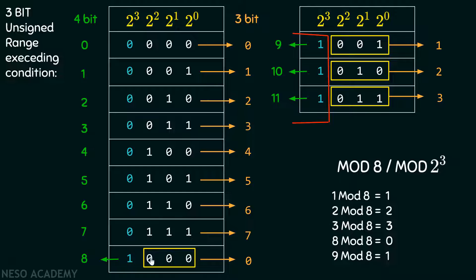This is because if we try to represent the value 8, why are we getting value equal to 0? Because we apply 8 mod 8, which is equal to 0. Mod gives us the remainder — this is the difference between a division and a mod function. Division provides us the quotient as a result, and mod gives us the remainder. Therefore, when we divide 8 by 8, we get result equal to 0. Similarly, if we try to divide 9 by 8, we get result equal to 1, because remainder is equal to 1. And if we divide 10 by 8, we get remainder equal to 2, and so on.